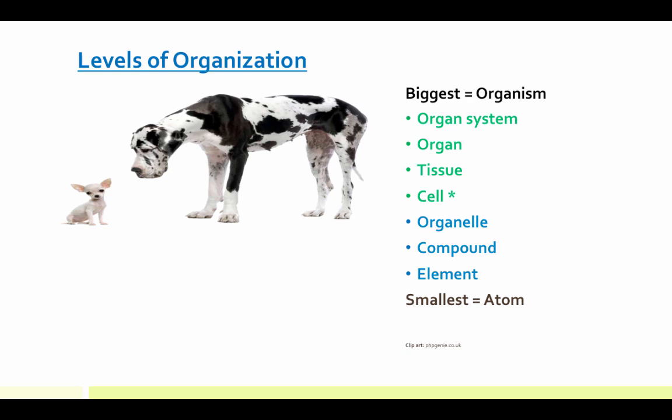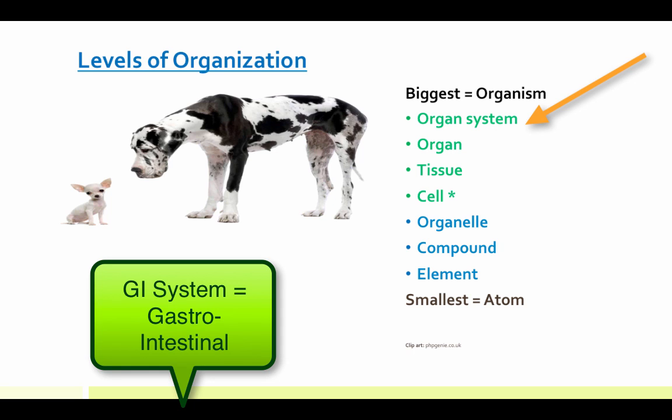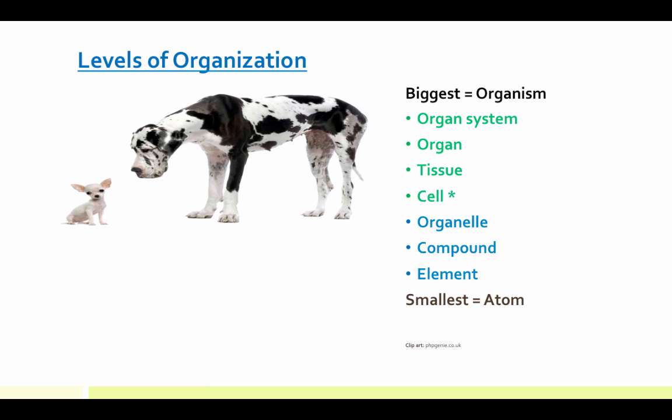Now the star there means this is where we're starting living things versus non-living. A group of cells that work together is called a tissue, like your muscle tissue. A group of tissues that work together is an organ like your kidneys, your heart, your lungs. When a bunch of organs work together, you get an organ system like your GI system. And then if you get a bunch of organ systems together, you get the biggest and that's an organism. I love the little chihuahua here and the Great Dane showing you how you're going from the smallest to the biggest.